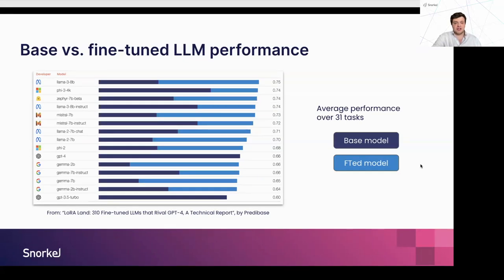There was a great piece of work by Predibase recently about the advantages of fine-tuning versus just using off-the-shelf models. You can see some of the results here, and I recommend reading the LoRA Land technical report for the more in-depth analysis. They were testing LLMs — both open source and proprietary — across 31 tasks, with a focus on fine-tuning small LLMs. Going from the base model to the fine-tuned model, we see huge increases in performance such that they match proprietary off-the-shelf models. Fine-tuning not only increases accuracy but allows you to use smaller models, which are easier to host and far cheaper.